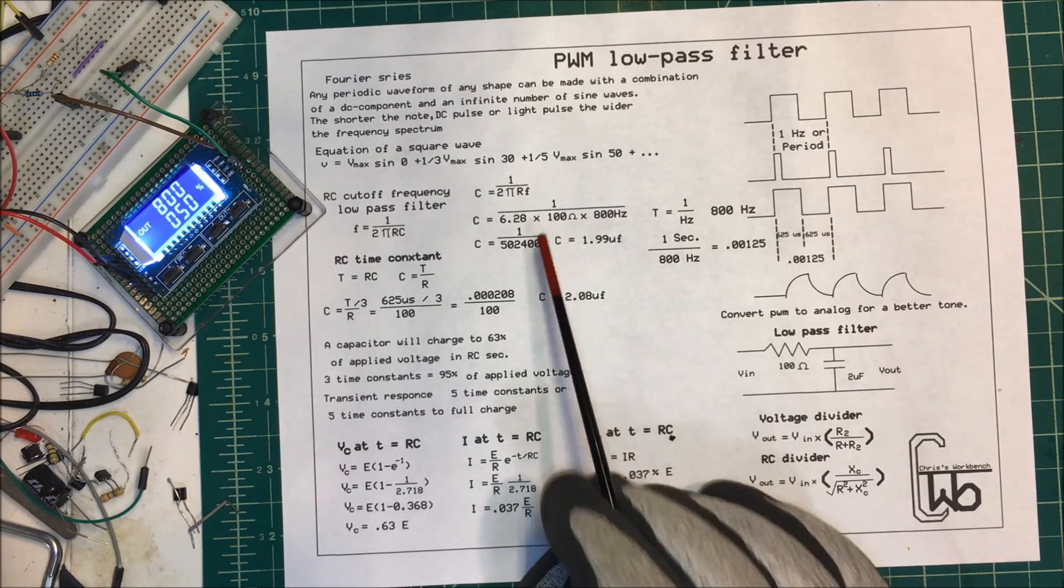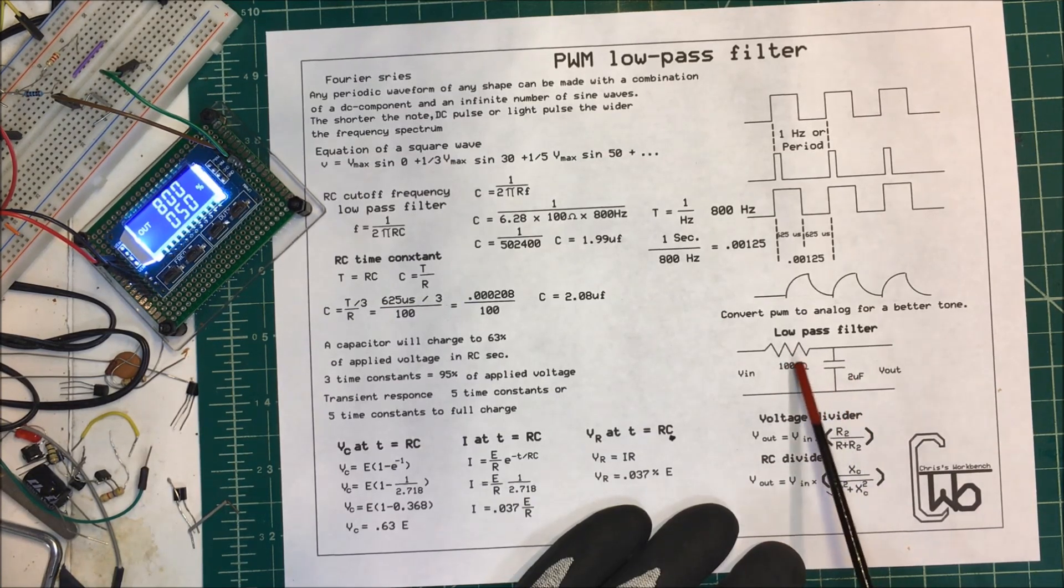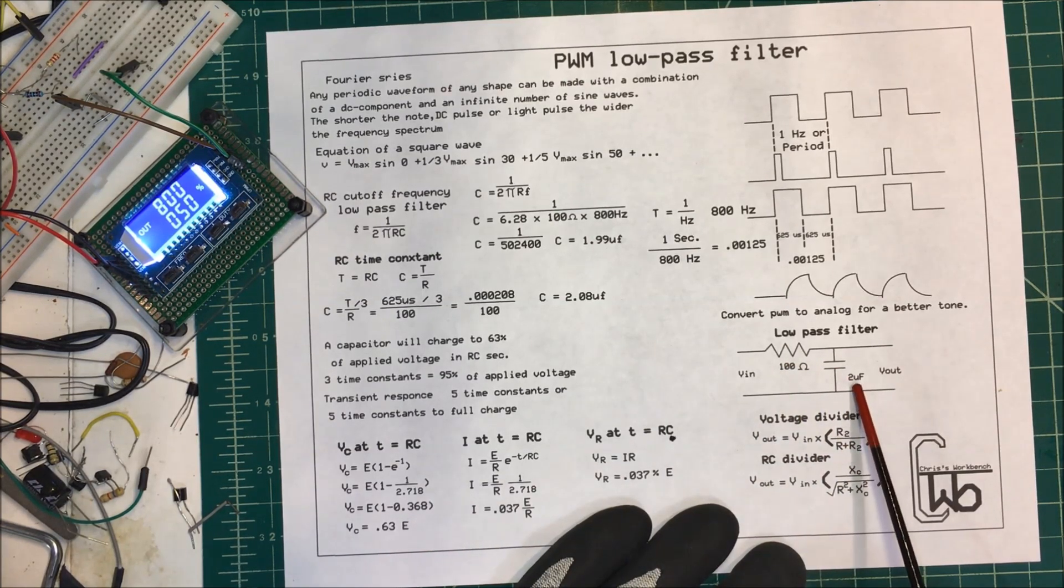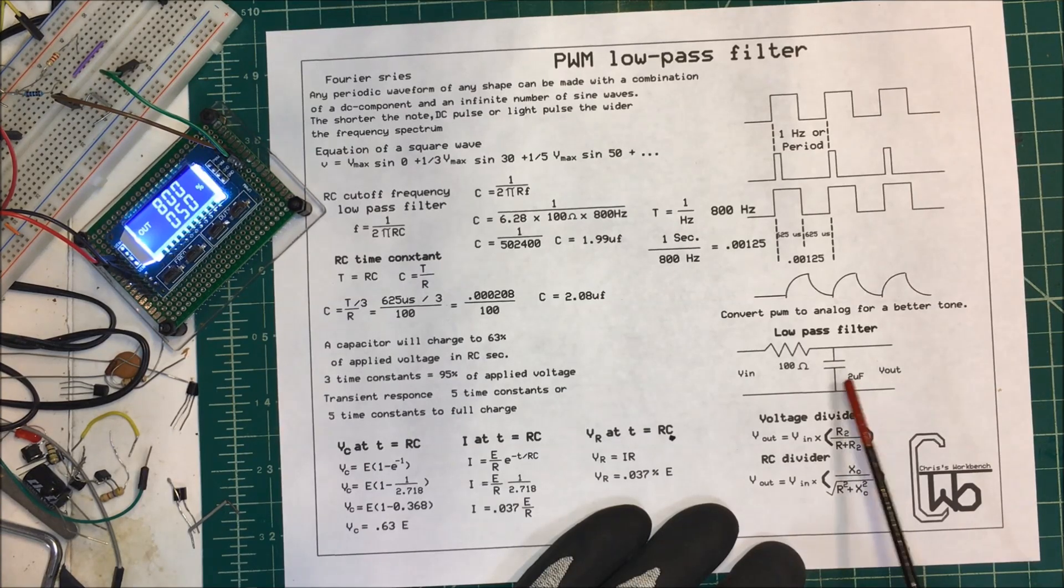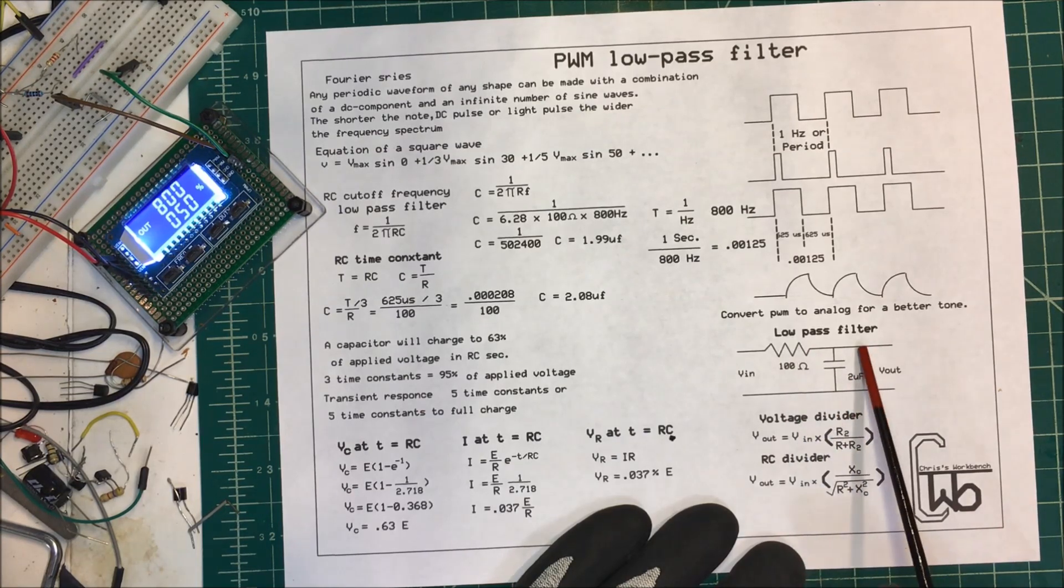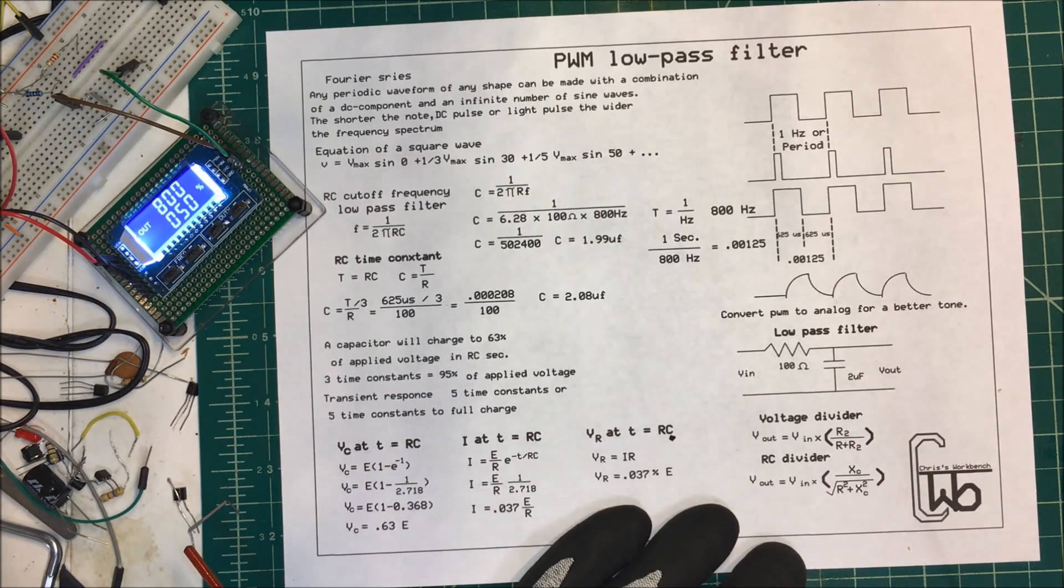The reason I picked 100 ohms is because when we make this, this is actually a voltage divider here. On the voltage divider, you want this resistance to be lower than this resistance here. The 2 microfarad capacitor at about 800 hertz is about 140 ohms or so. You want this one to be a little bit lower to get your voltage. If these were the same, the voltage would be cut in half. We're putting five volts in here, so we'd end up with two and a half volts out here.